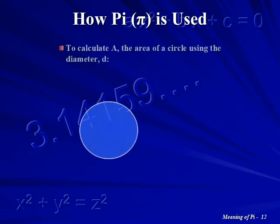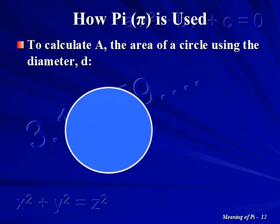To calculate the area of a circle, A, using the diameter, D, multiply Pi by the diameter squared, then divide by 4.